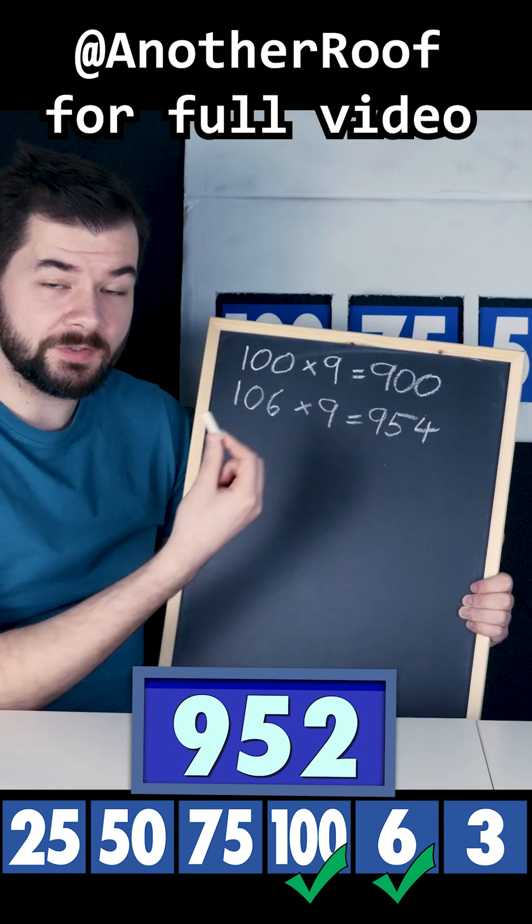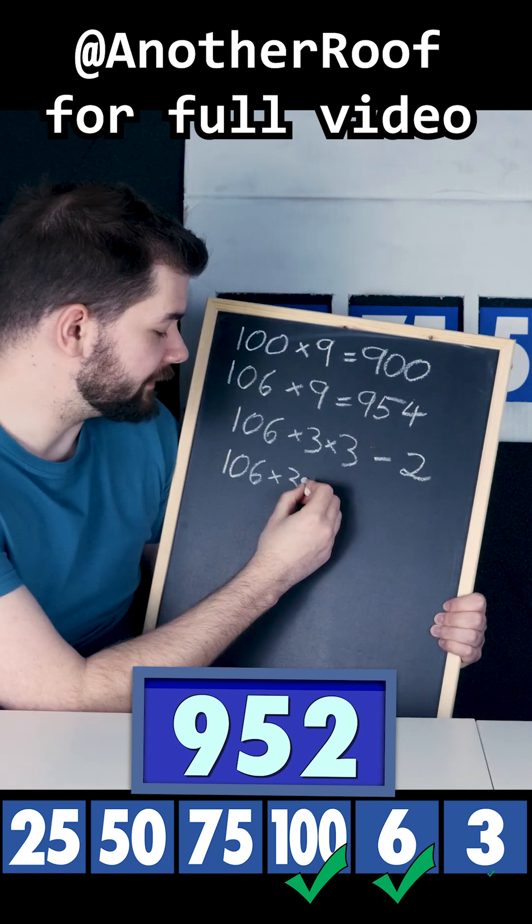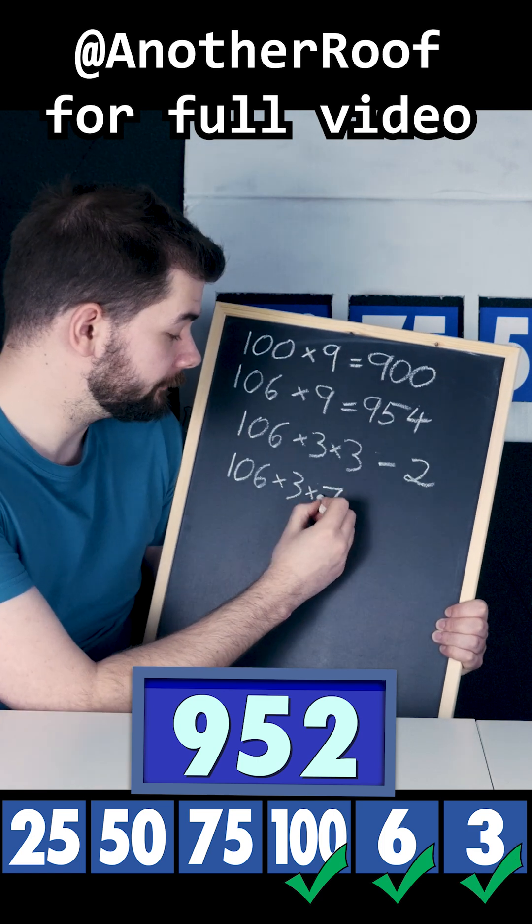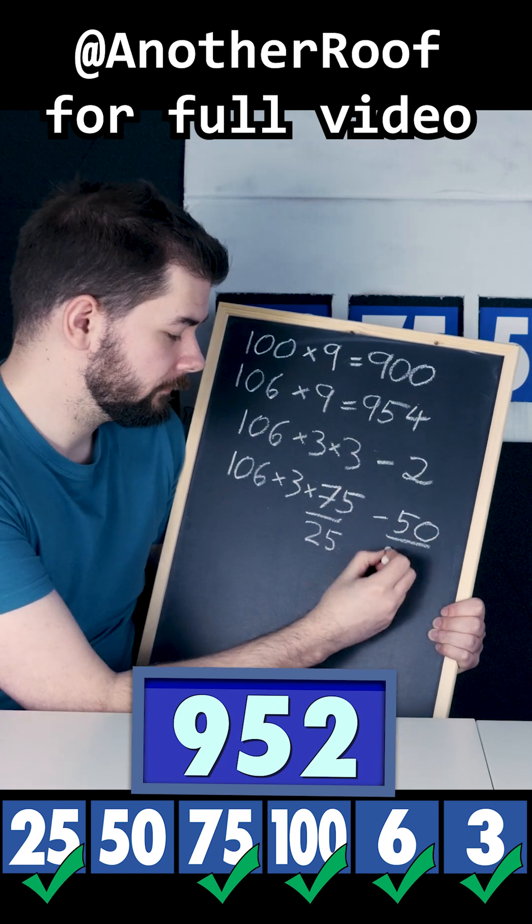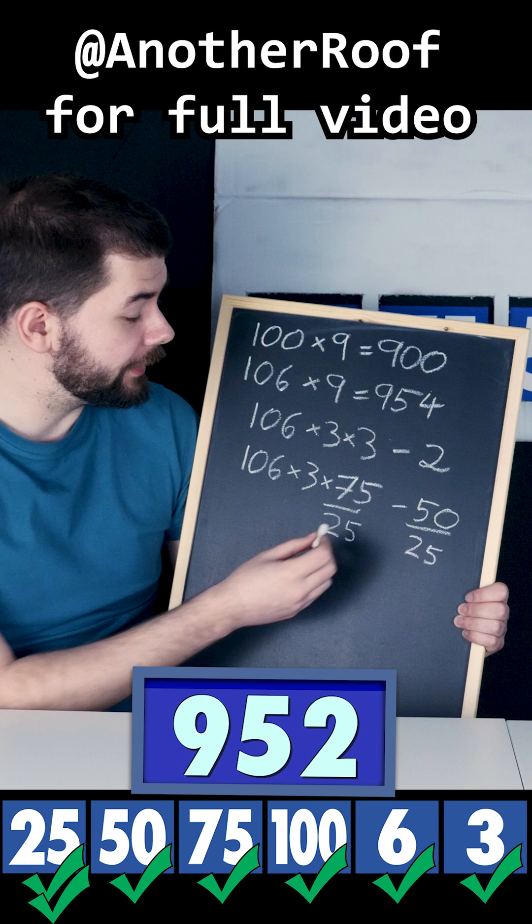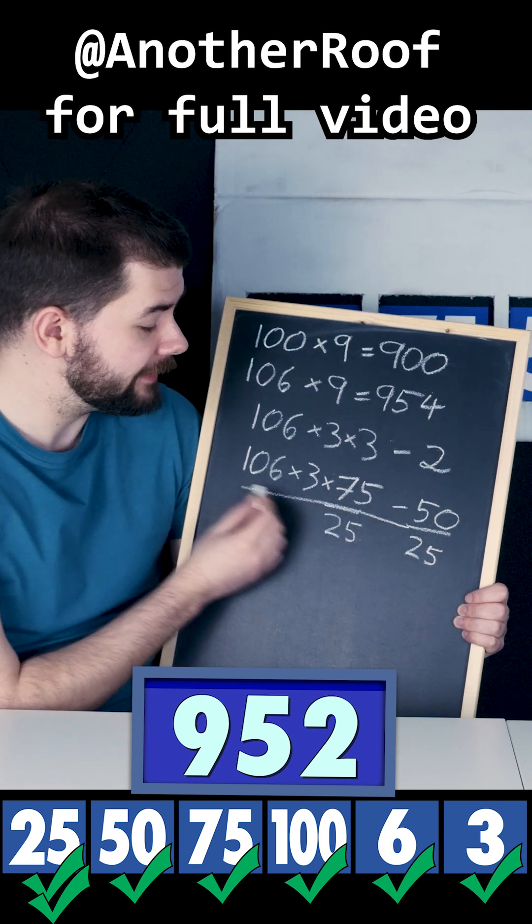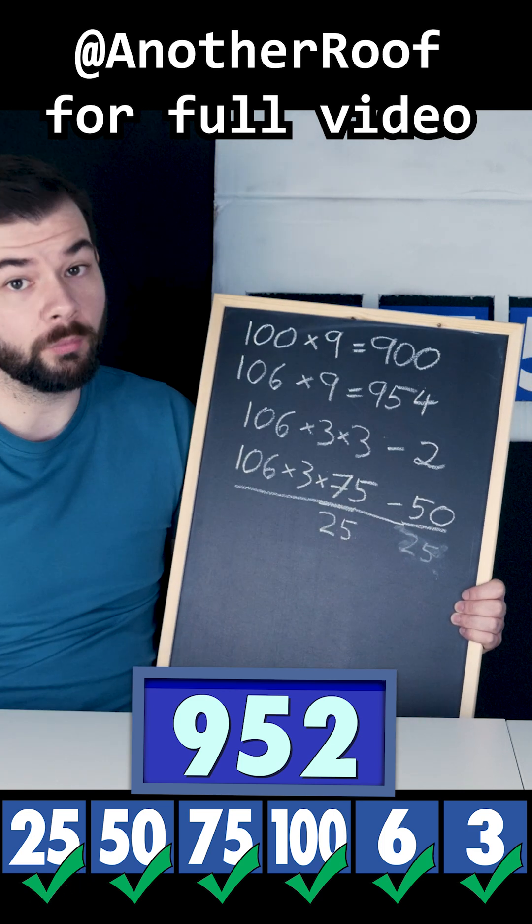To multiply by 9, we need to multiply by 3 twice. Instead of multiplying by 3, we'll just multiply by 75 over 25. And instead of subtracting 2, we'll just subtract 50 over 25. But we know how fractions work. We can just divide by 25 at the end so that we only use the 25 once.